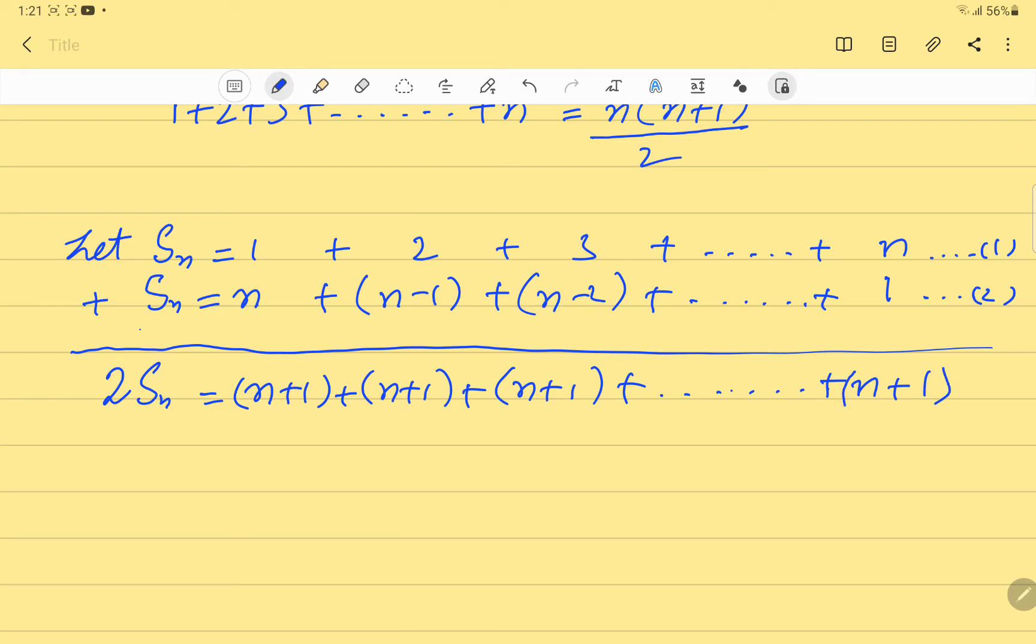We know that all these terms are appearing n times, so we can write 2S_n equals n times (n+1). Let us divide both sides by 2.